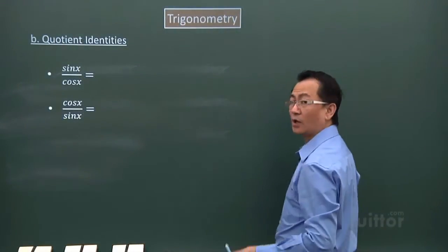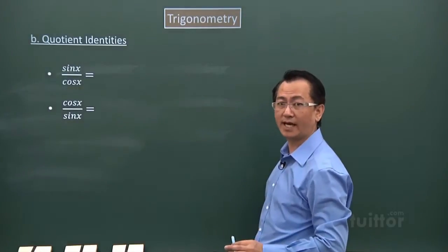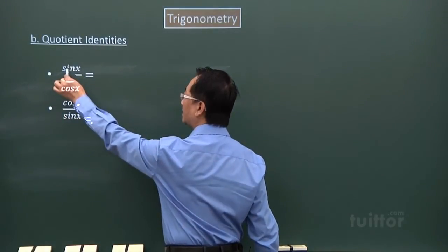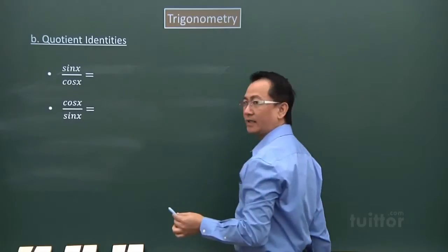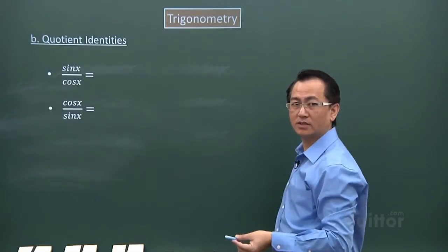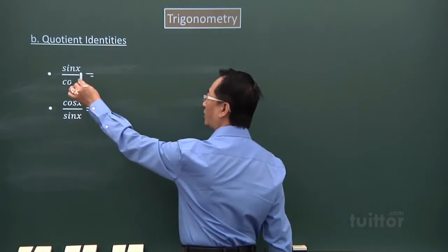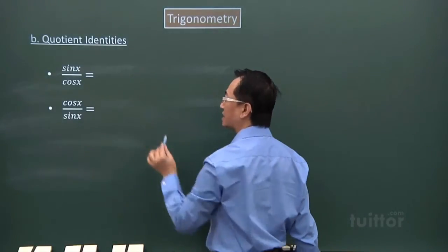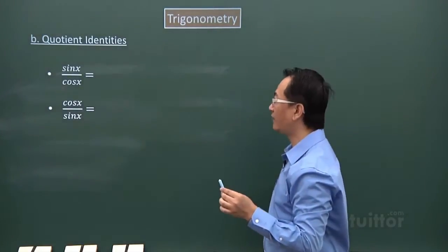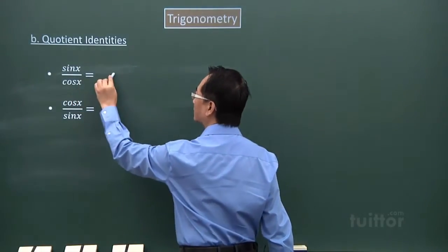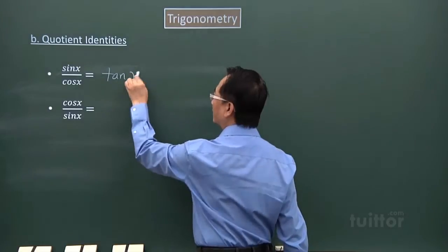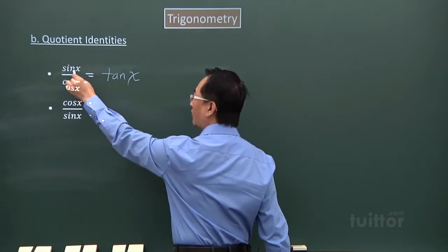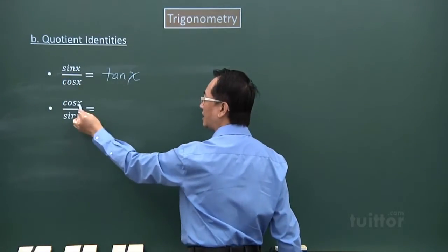The next group is the quotient identities. Here you have a numerator divided by a denominator — that's what we call a quotient. This group, where you have an algebraic fraction, is reduced to just a single trigonometric function. So sin x over cos x will give you tangent x.